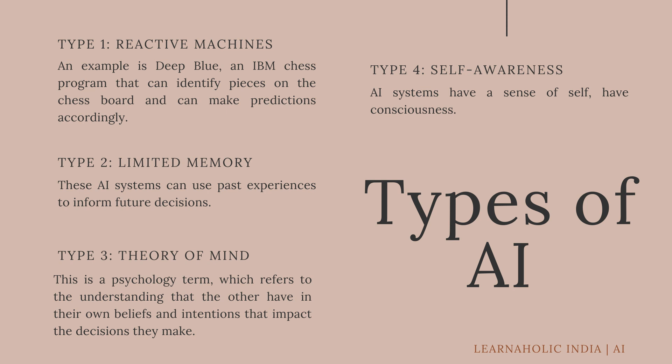The next type is Theory of Mind. This is a psychology term which refers to the understanding that others have their own beliefs and intentions that impact the decisions they make. The fourth type is Self-Awareness. AI systems in this category have a sense of self and have consciousness. Machines with self-awareness understand their current state and can use that information to infer what others are feeling.